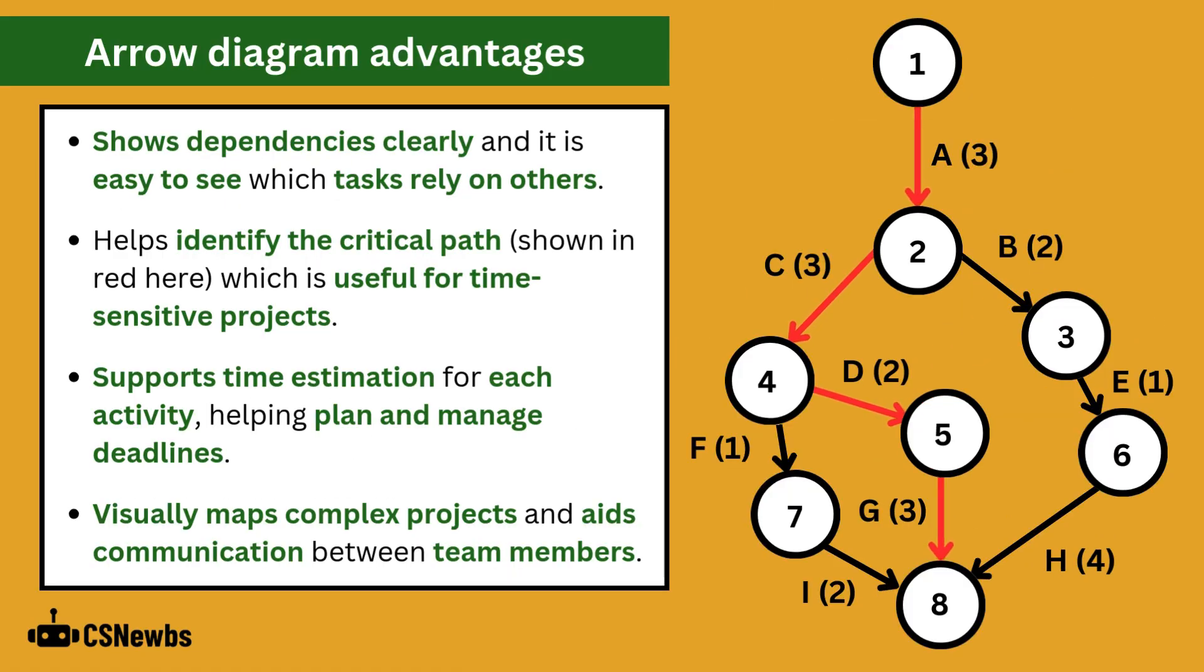Advantages of using the arrow diagram include that they show dependencies clearly and it's easy to see which tasks rely on others. They help to identify the critical path which is shown here in red which is useful for time-sensitive projects as it shows the minimum amount of time that the overall project may take.